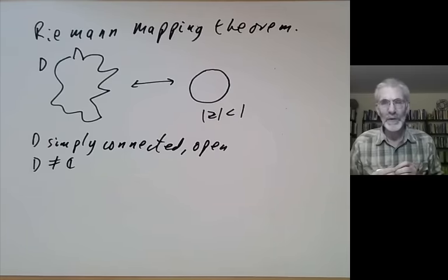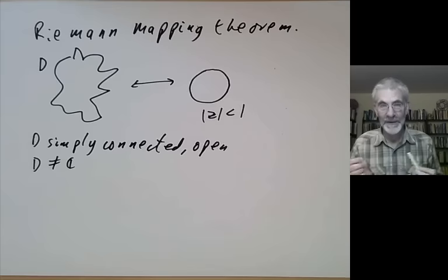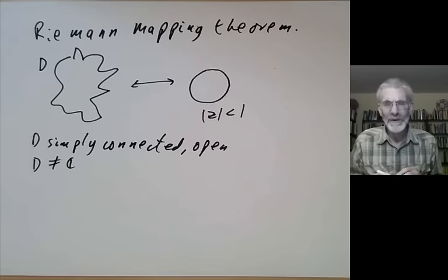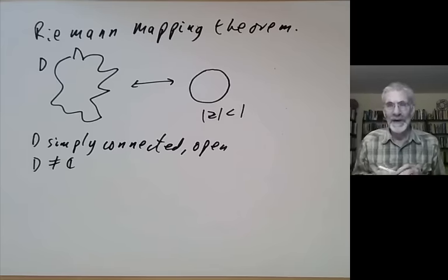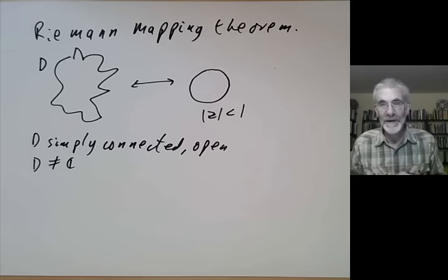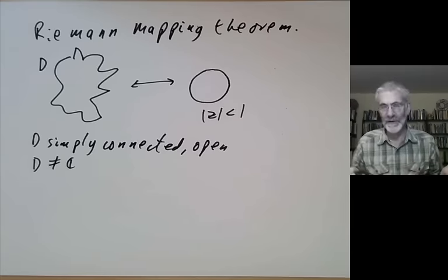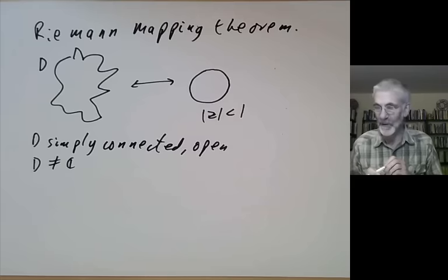Riemann gave an argument for it in his thesis around 1851. However, his argument was notoriously incomplete — it used something called the Dirichlet principle, and it wasn't really clear under what circumstances this was valid. It took about 50 years to sort out what was actually going on. The first complete proofs were given about 50 or 60 years later by Osgood, Carathéodory, and Koebe. So the theorem really ought to be named after them as well.